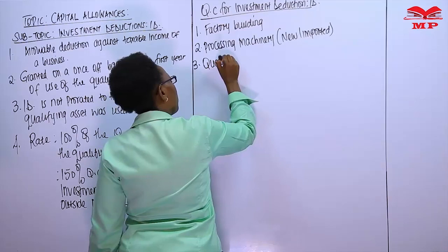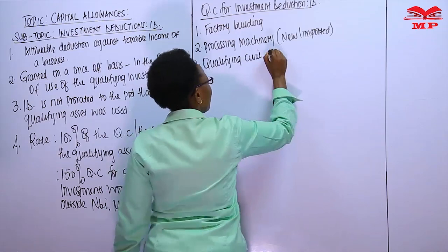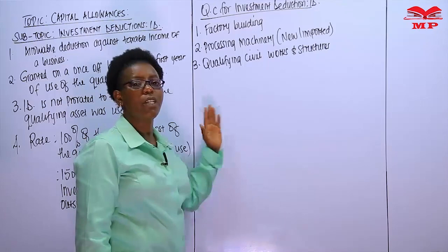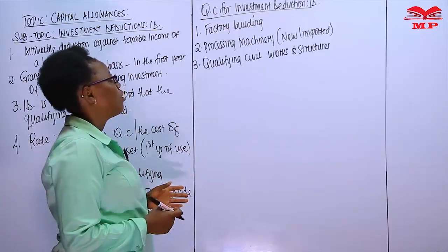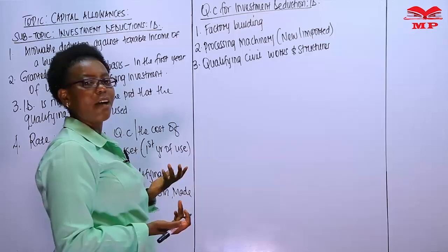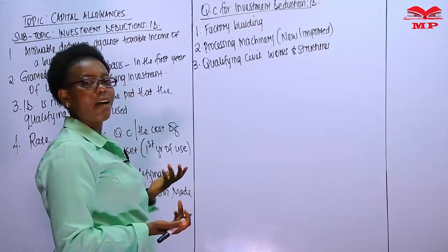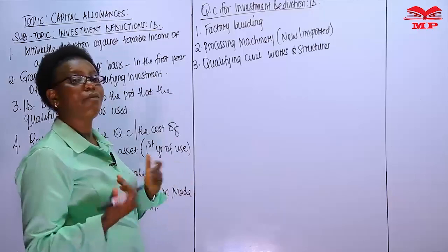Number three is qualifying civil works — works and structures that help you access the factory building. For example, you'll have railroad lines and roads. If your factory is in a remote area, you need to construct an access road and that road will qualify. You may also need parking for trucks to deliver raw materials and take finished products. Roads, parking areas, railway lines, and loading bays all qualify.